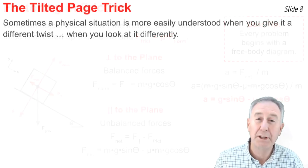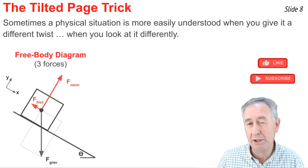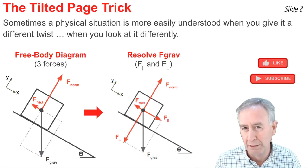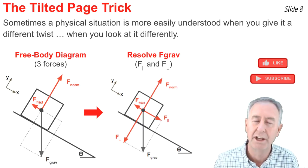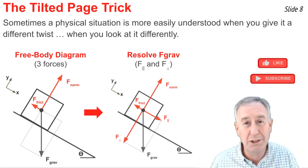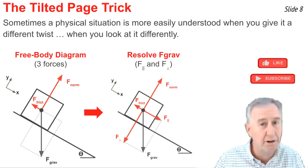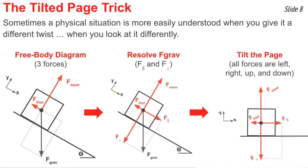Now it's time for some numbers, but first I have a trick I like to use — a way of looking at the problem differently. Here's the free-body diagram with three forces acting on it. We take the gravity force and break it into its components. I employ what I call the tilted page trick: you could tilt your head to make all forces appear vertical and horizontal, but that gives you taco-neck syndrome. A better way is to tilt the page itself, and when you do, you get a diagram with all forces going up, down, left, and right. It no longer looks like an inclined plane problem; it looks like a standard Newton's second law problem in one dimension.